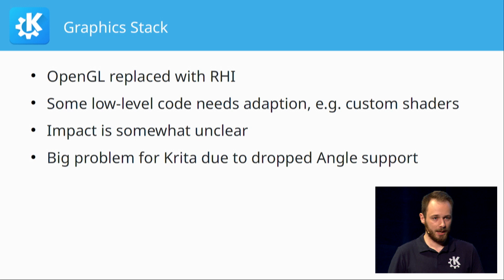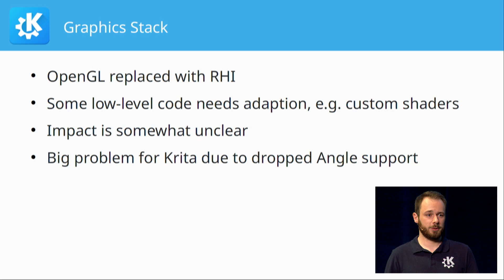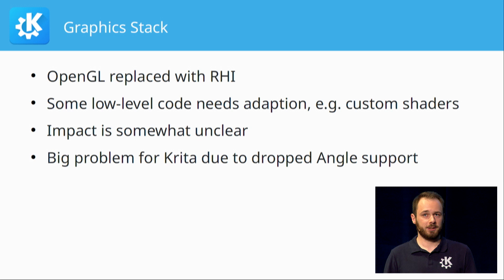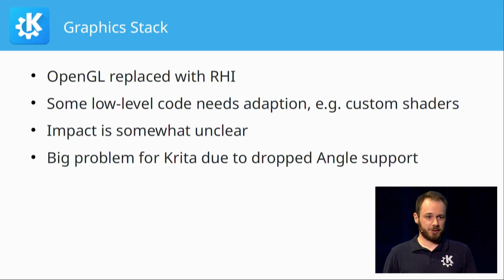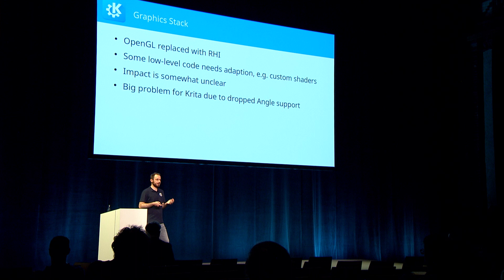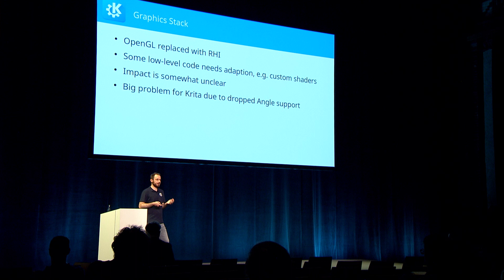The impact on KDE's codebase is somewhat unclear because we haven't tried running some of the more graphics-intensive apps against Qt 6 yet. Krita in particular is expecting some larger problems. They had bad experiences with OpenGL on Windows and their solution was to use ANGLE, a translation layer that transparently translates OpenGL to Direct3D. But Qt 6 dropped support for using ANGLE because in theory you don't need it anymore with RHI. Of course, Krita was not written against RHI so it can't really make use of it, and it's not quite clear yet how this will look in the future.